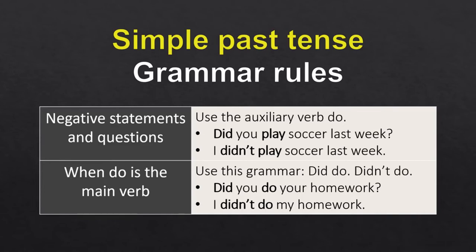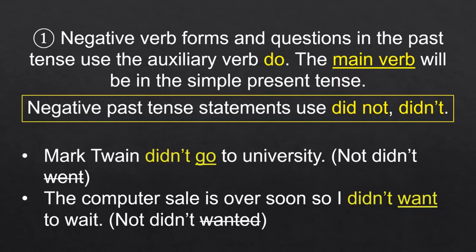Simple past tense grammar rules: Negative statements and questions use the auxiliary verb 'do.' Negative verb forms and questions in the past tense use the auxiliary verb 'do,' and the main verb will be in the simple present tense. Negative past tense statements use 'did not' or 'didn't.'